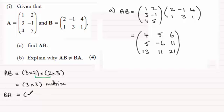Whereas if we did B times A, then we've got a 2 by 3 matrix for B multiplied by a 3 by 2 matrix for A. Again, it's possible to do the multiplication because those two inner numbers are exactly the same.